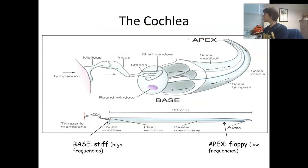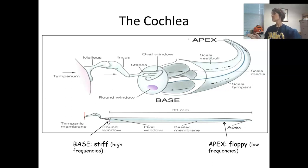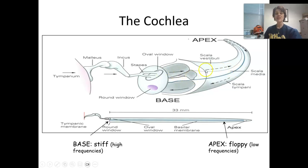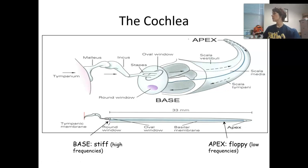Sound vibrates the tympanic membrane, which sets the three ossicles in motion. The stapes is attached to the membrane of the oval window, causing the fluid inside the scala vestibuli to move. This motion circles through the scala vestibuli at the apex and then the scala tympani. This movement of fluid causes the basilar membrane in the organ of Corti to move. When the oval window is pushed in by a sound wave, the round window pushes out — this is necessary, otherwise the fluid wouldn't move and we wouldn't be able to hear.